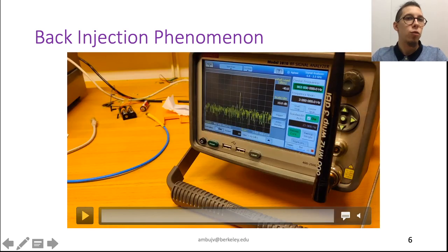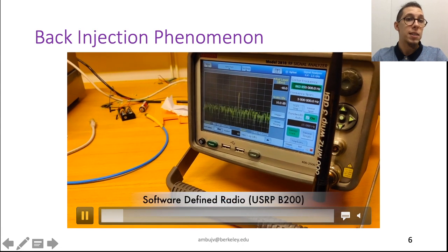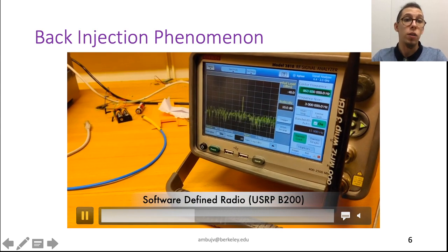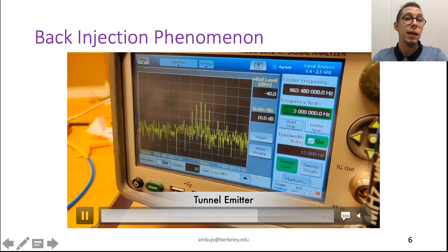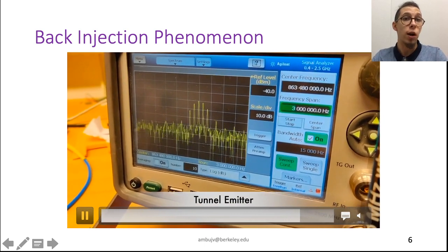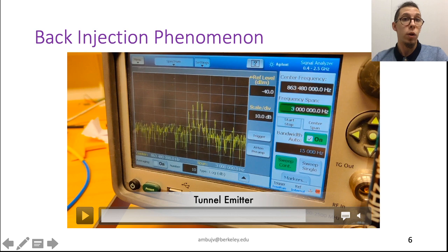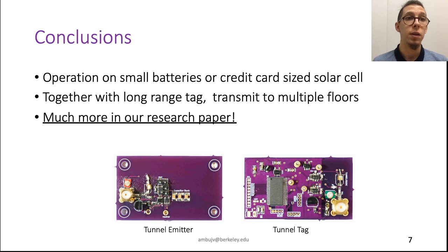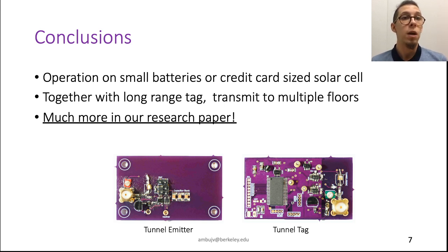We now show the effect of the back injection phenomenon. In a conventional backscatter system using an SDR, we barely see the backscattered signal. On the other hand, when we use our system Tunnel Emitter, the backscattered signal is as strong as the carrier signal — and notably, we used a similar strength carrier signal in both cases. In conclusion, Tunnel Emitter enables carrier signal generation on small batteries or even on energy harvested from the environment. One of our main results is that together with a long-range tag, Tunnel Emitter is able to transmit over multiple floors of our university building. Please find many more exciting results in our research paper.